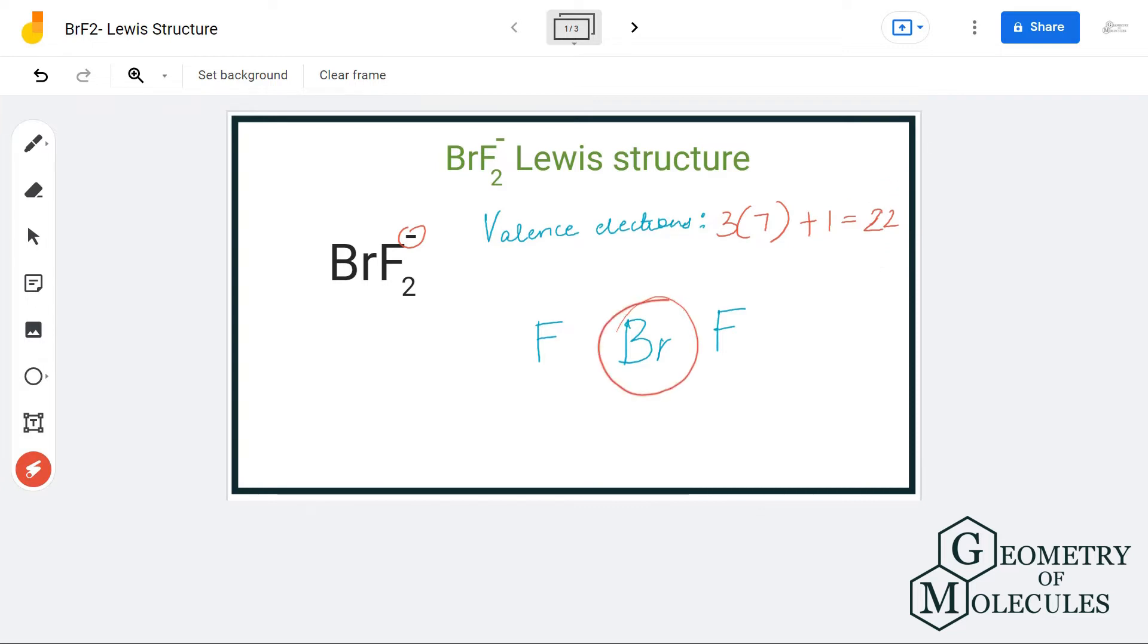Now bromine atom will take the central position and both the fluorine atoms will be placed around bromine atom like this.